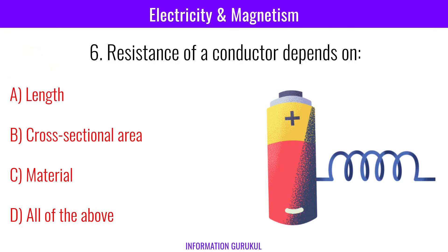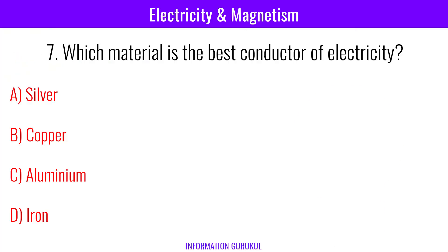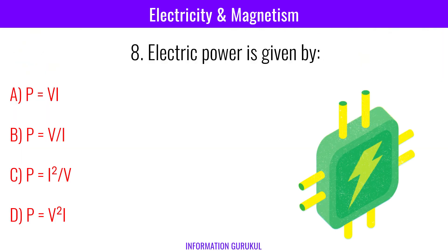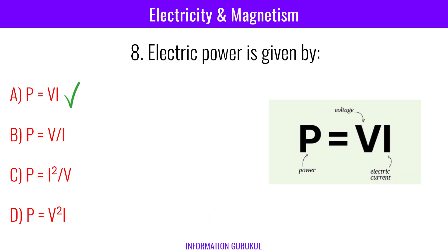Resistance of a conductor depends on its length, cross-sectional area, and material. Which material is the best conductor of electricity? Silver. Electric power is given by P = V × I.